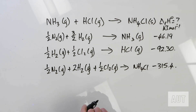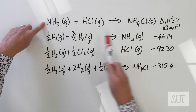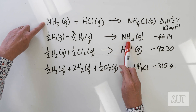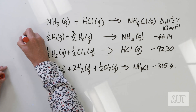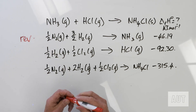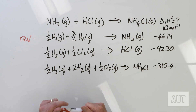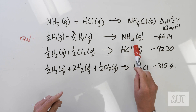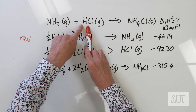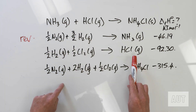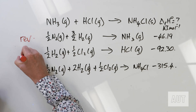Now let's treat this as a Hess's law problem and check everything — left-hand side, right-hand side, all of that. Ammonia is on the left-hand side in our target reaction, but here it's on the right-hand side — it's on the wrong side. So we're going to have to reverse that equation. For HCl, we've got one mole on the left-hand side of our target, but one mole on the right-hand side here, so we need to reverse that one as well.